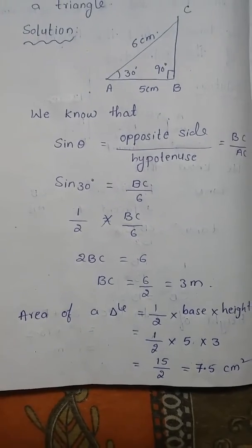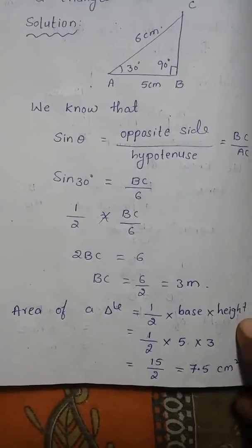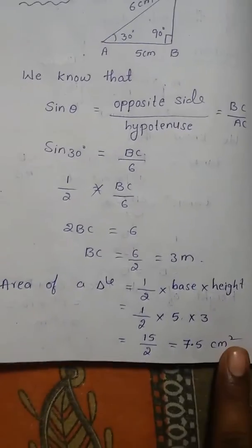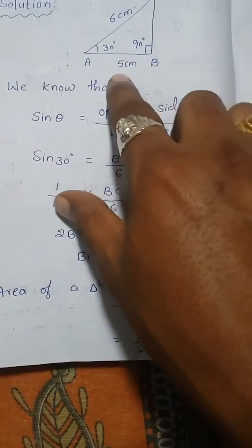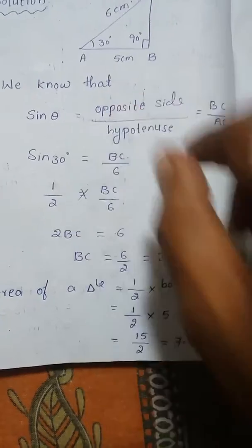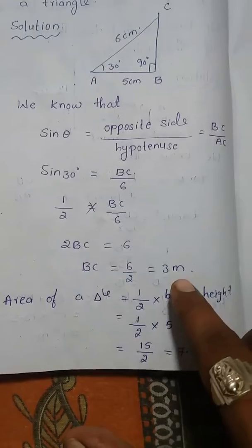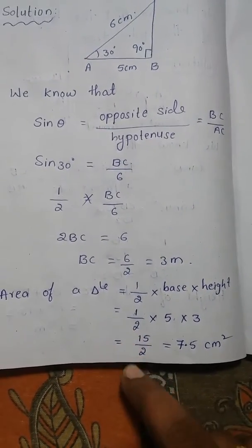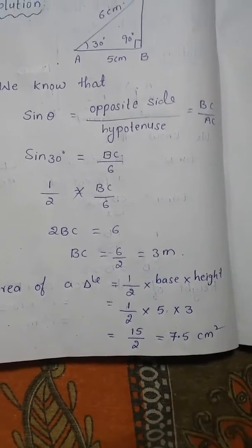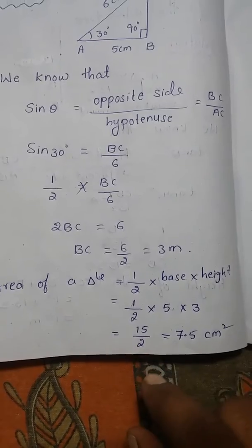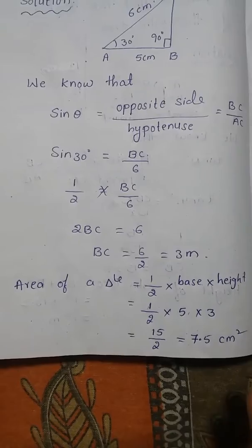Now we will find the area. Area of the triangle equals half base into height. Half times base AB, which is 5 centimeters, times height BC, which is 3 centimeters. So 1 by 2 into 5 into 3: 5 times 3 is 15, and 15 by 2 equals 7.5 centimeters square.